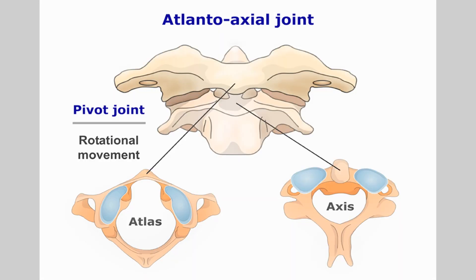The cervical region is the most mobile part of the spine. In particular, the atlanto-axial joint, being of pivot design, allows up to 45 degrees of rotation.